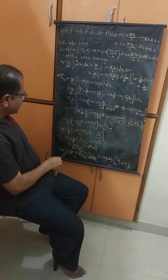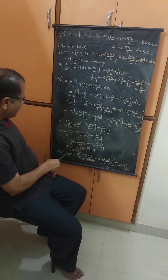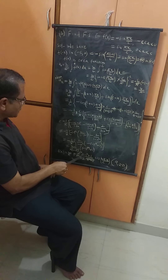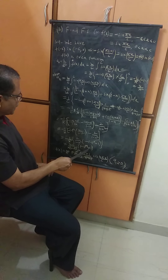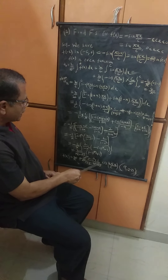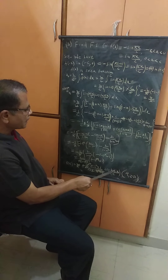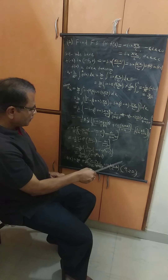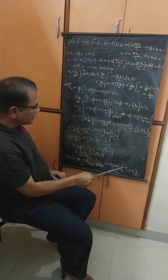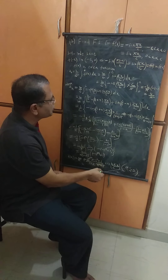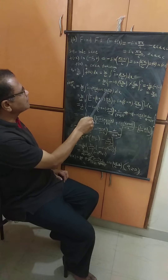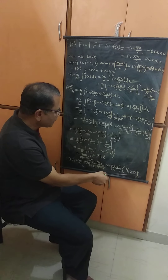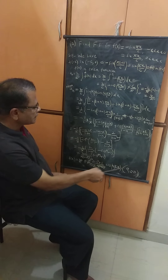Putting these values of a0 and an into our formula, f(x) = 2/π minus 2 times the summation (from n=1 to infinity) of (−1)^(n+1) / (n²−1) · cos(nπx/c). Note that n should not equal 1 here; if you put n = 1 into the formula for an, you get a1 = 0 after evaluation. Therefore, this is our final answer.